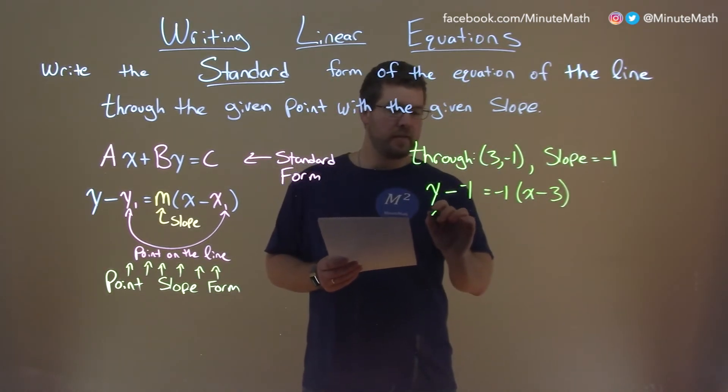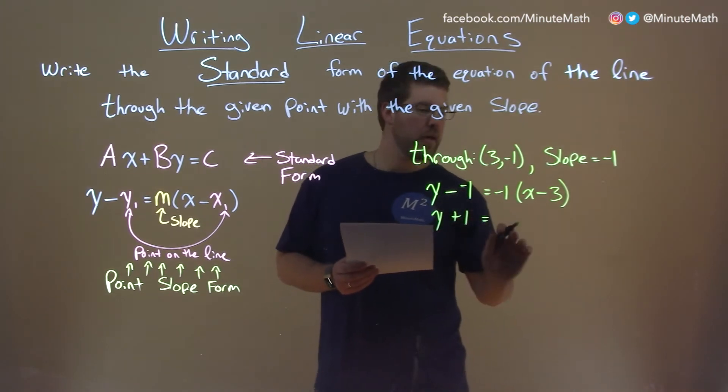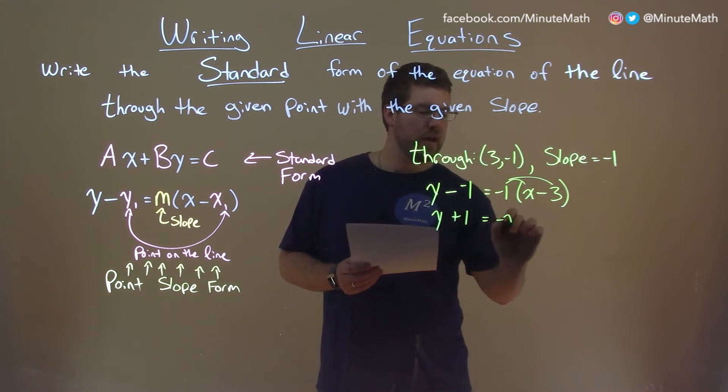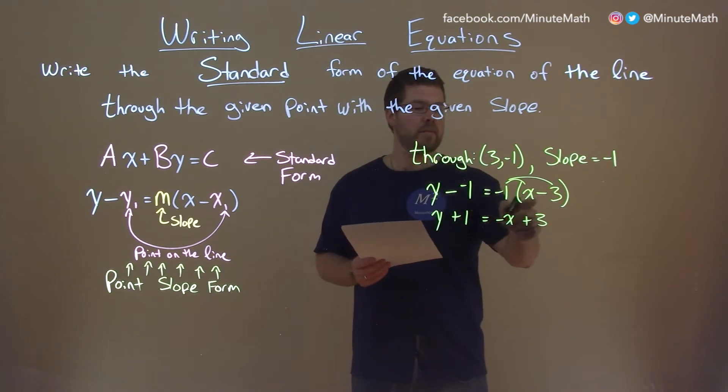So, simplify this: y plus 1 here - two negatives make a positive - equals distribute the minus 1 to both parts. So we have negative x here and then we have plus 3. Remember, negatives make this a positive, that a negative.